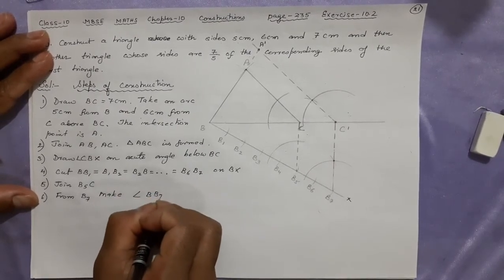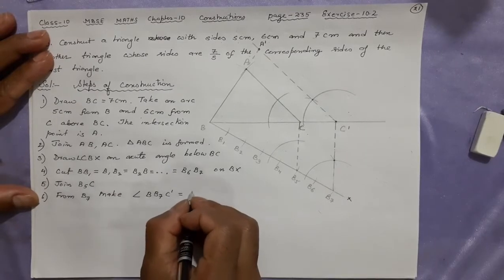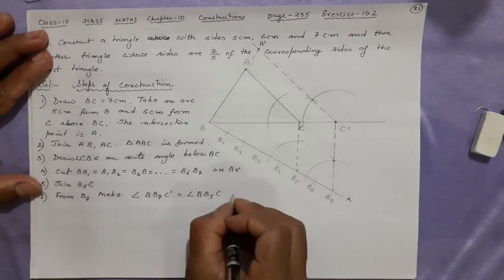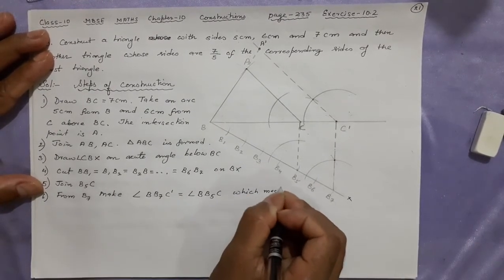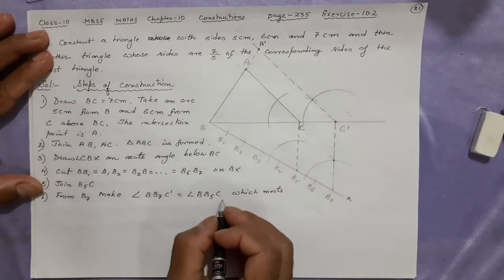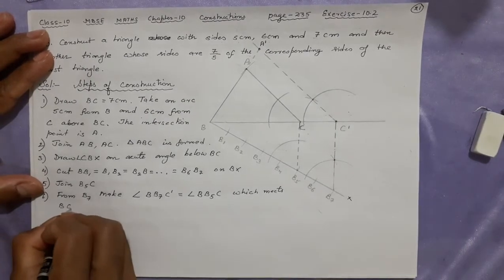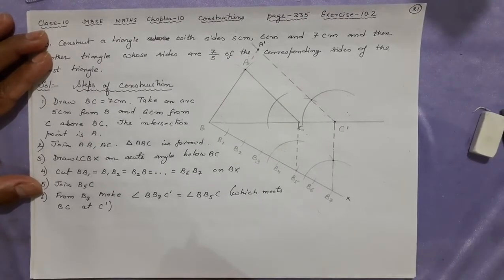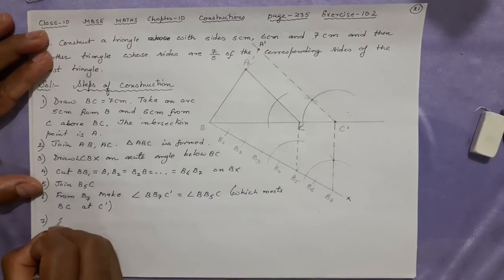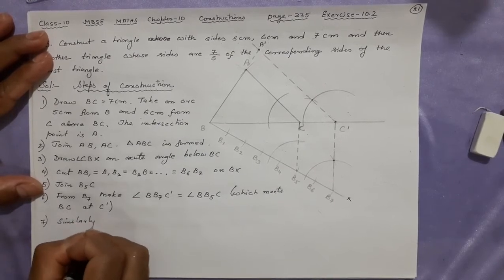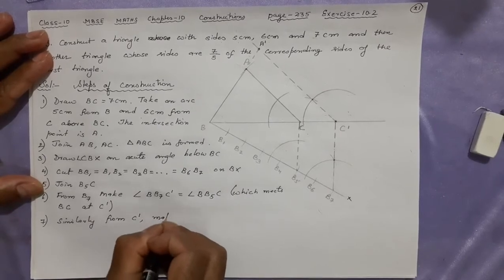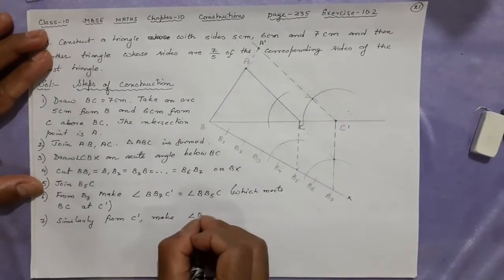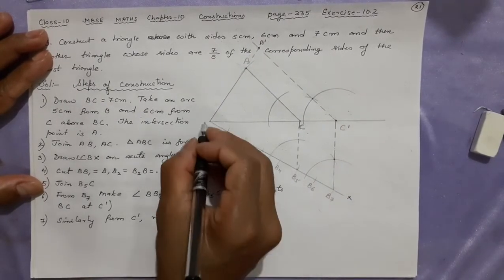Now next step is join which I joined B5C. After that from B7 make angle BB7C dash such that it is equal to angle BB5C, which meets BC at C dash. This will meet here at BC. You can write this in bracket. Number seven, similarly from C dash make angle BC dash A dash equal to BCA.